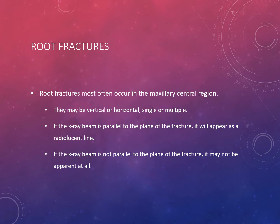Root fractures are less common than crown fractures but still occur, usually in the maxillary central region. They can be vertical or horizontal, and there can be single or multiple fractures on the same tooth. They typically happen from an accidental fall, a traumatic blow, or biting into something hard like an almond or chewing ice. When taking the radiograph, if the x-ray beam is perfectly parallel to the plane of the fracture, it will appear as a radiolucent line.